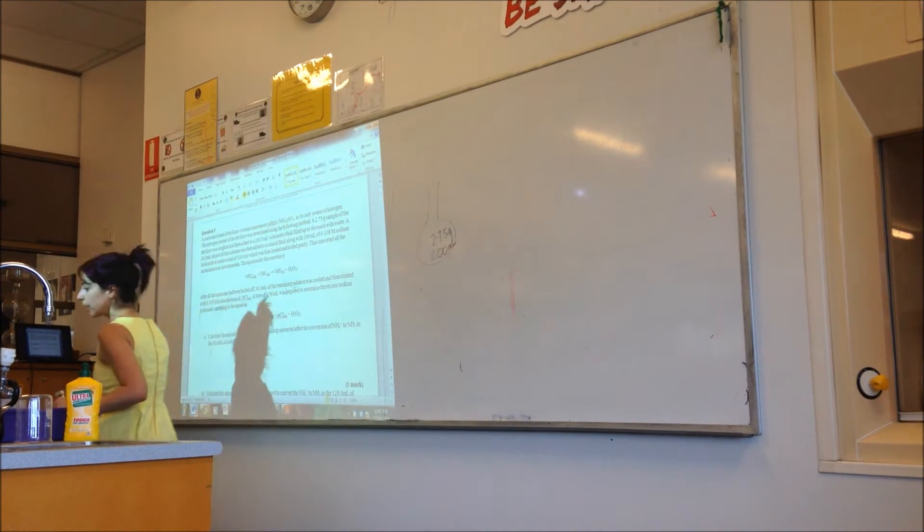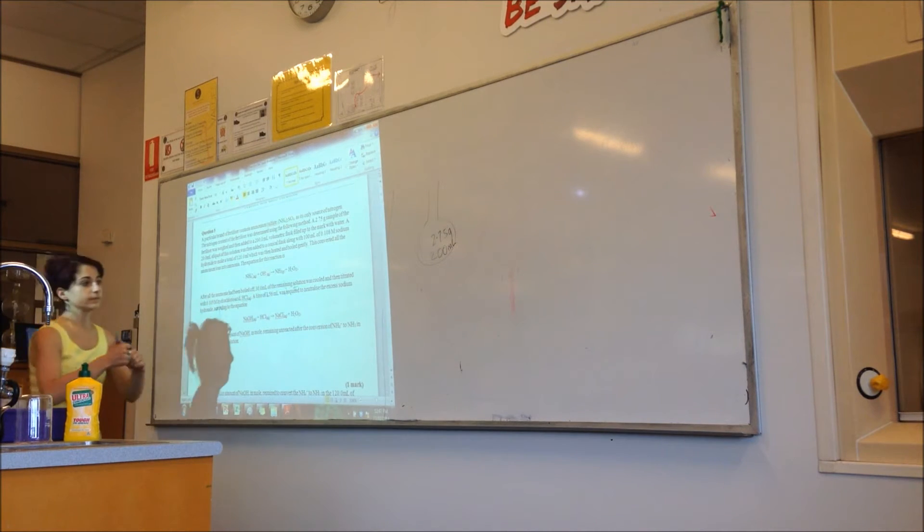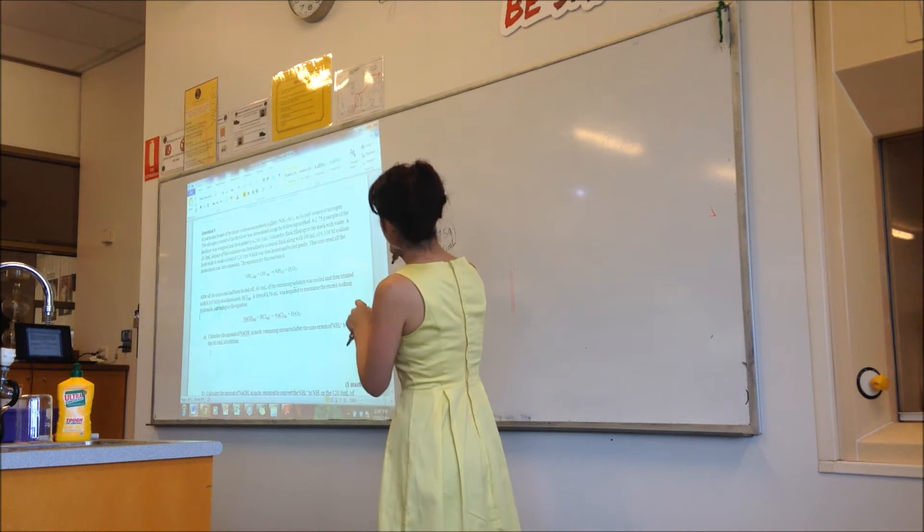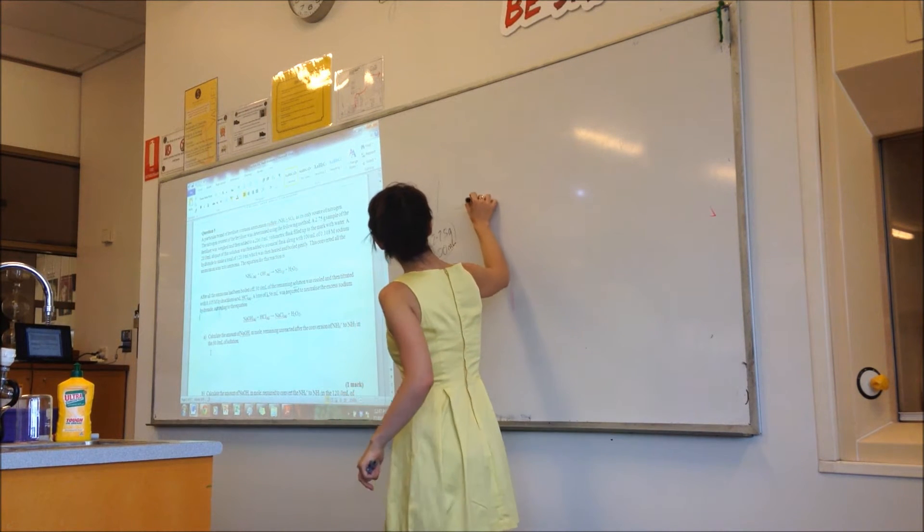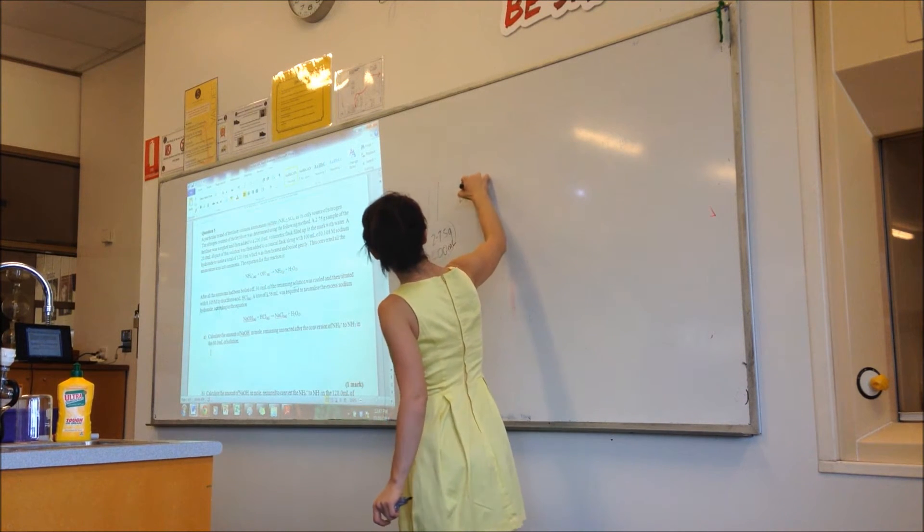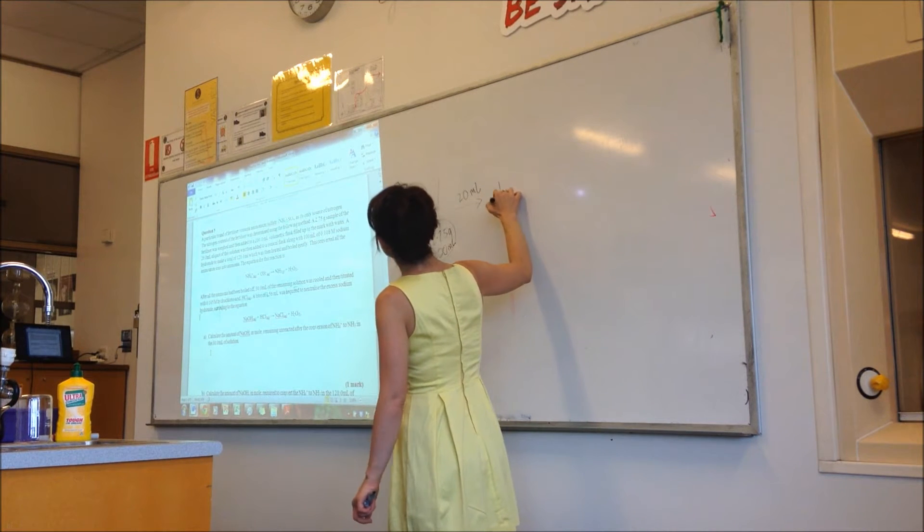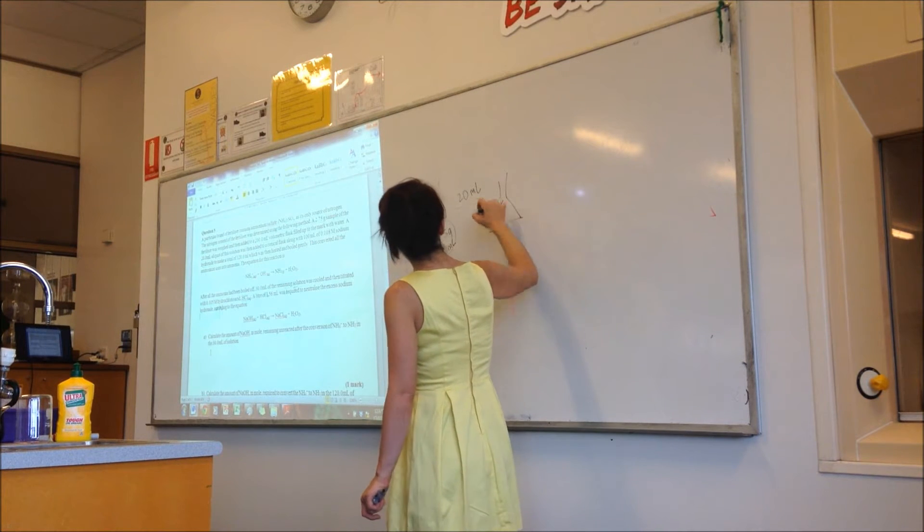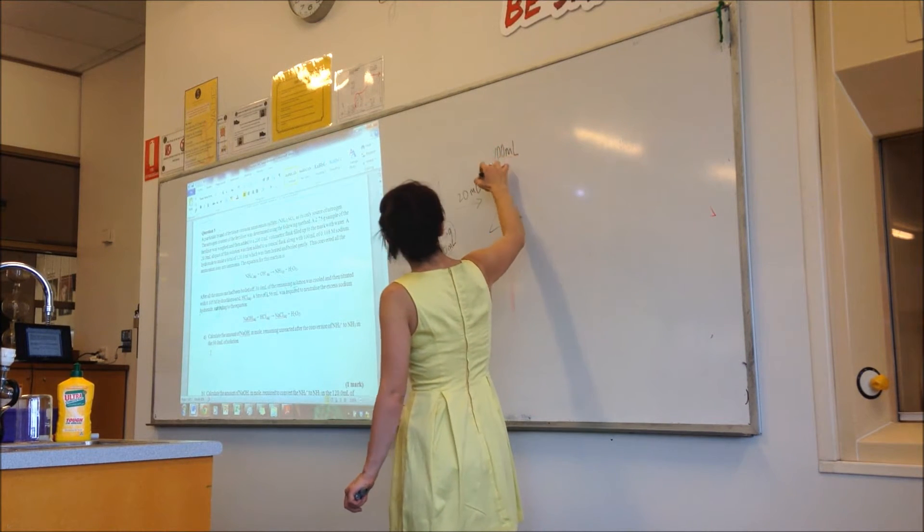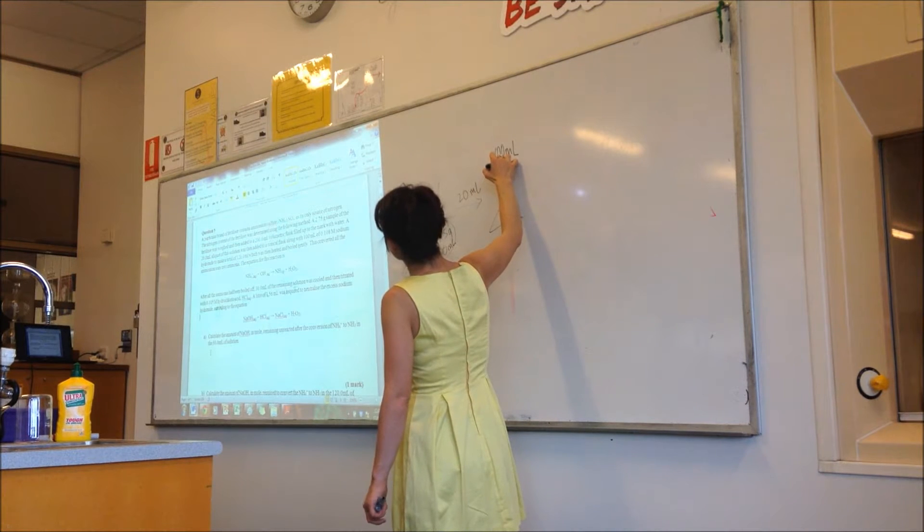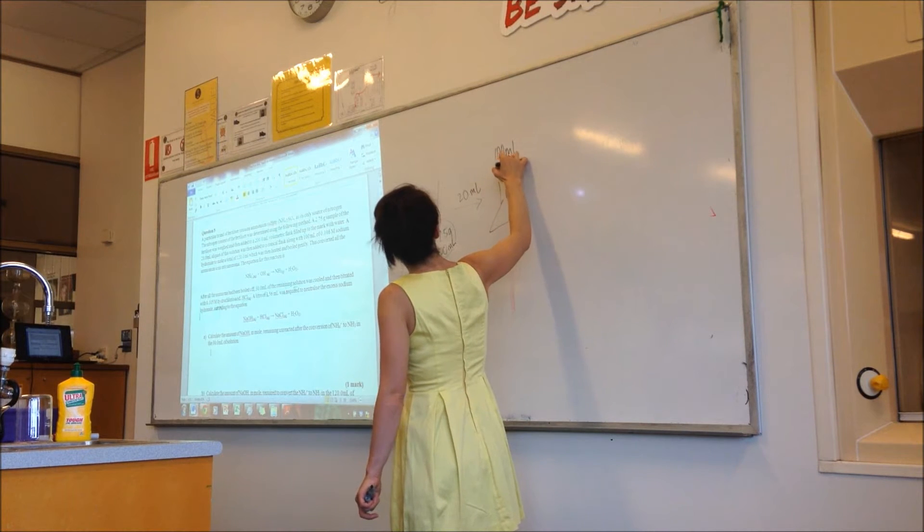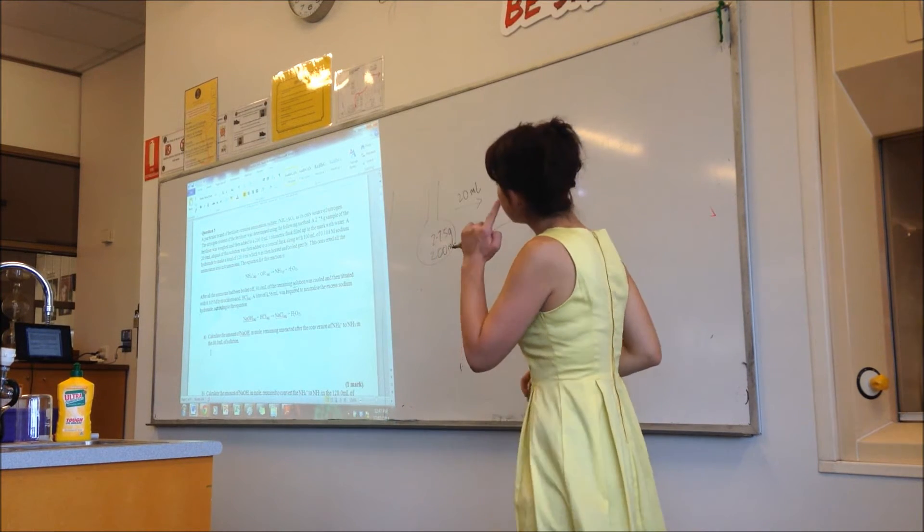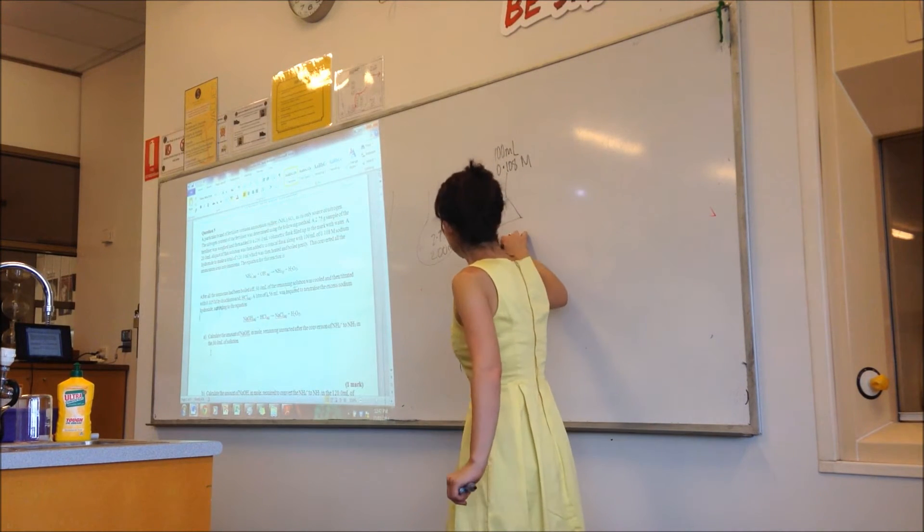A 20ml aliquot of this solution was then added to a conical flask along with 100ml. What does that tell you about the amount of sodium hydroxide we're adding?